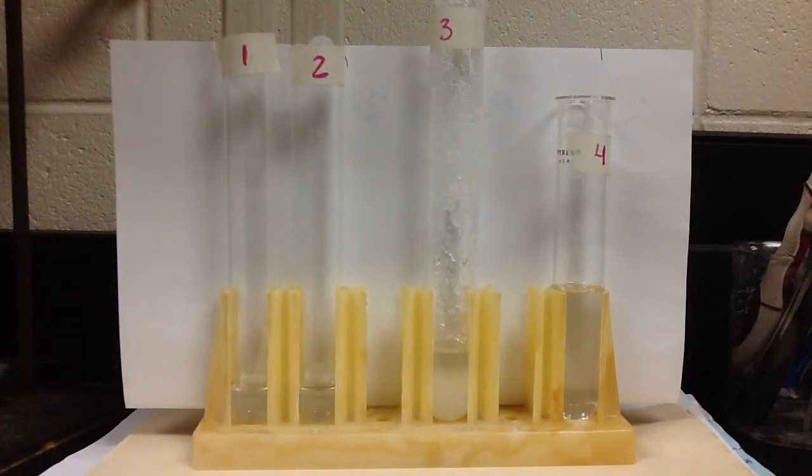And what we have in test tube number four is sort of the outcome of that. So what we did is we heated it all up, we got it to dissolve, and then we slowly cooled it back down to room temperature. So once we got back down to room temperature, what did we do? We added one solute crystal.